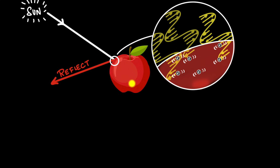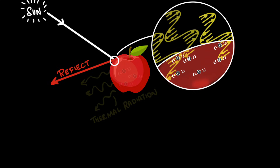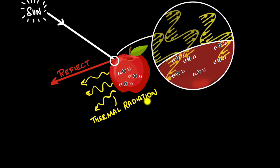But wait — if this were the case, continuously shining light on the apple should continuously increase its temperature. But that doesn't happen. Why not? Well, as the electrons jiggle they produce their own electromagnetic waves — because any accelerated charge produces electromagnetic waves. We call these thermal radiation, because that radiation comes from the thermal motion of the electrons. The apple is absorbing energy from sunlight but also losing energy at the same rate via thermal radiation, so a balance is achieved — thermal equilibrium — and its temperature stays the same.